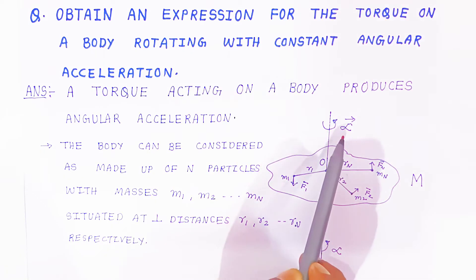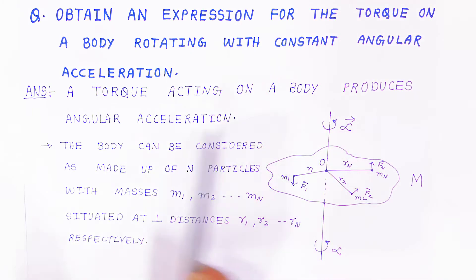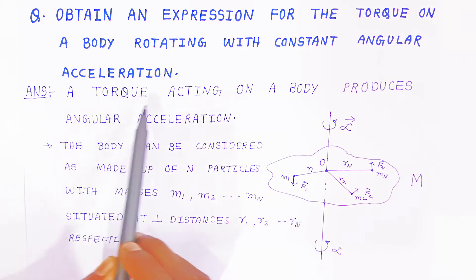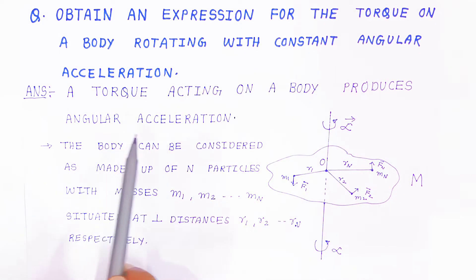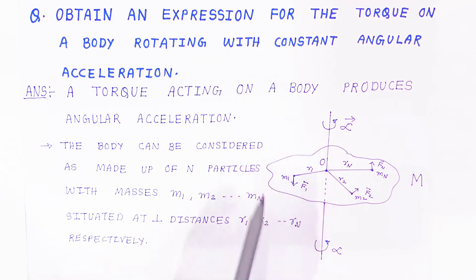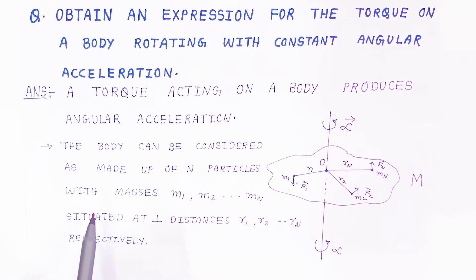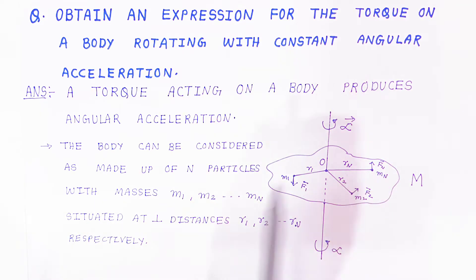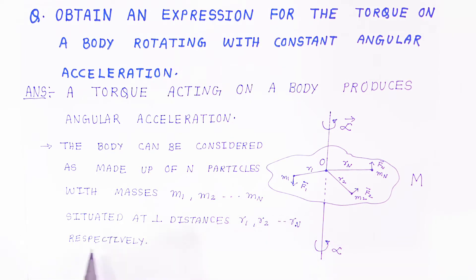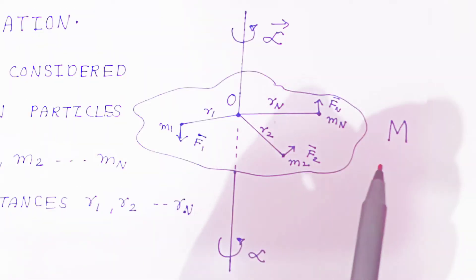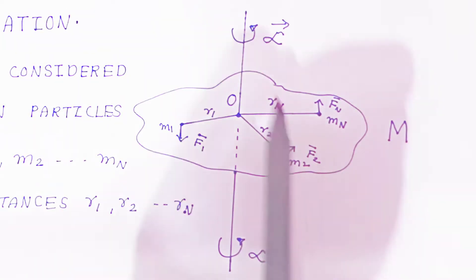What is given? Constant angular acceleration. First of all, you should know that torque acting on a body produces angular acceleration — because of torque only, this body will perform the angular acceleration. This body is an irregular rigid body, and we consider it is made up of n number of particles, with masses m1, m2, up to n number of masses situated at perpendicular distances r1, r2, and rn from the axis of rotation respectively. The mass of the body is capital M and it is rotating with constant angular acceleration alpha.